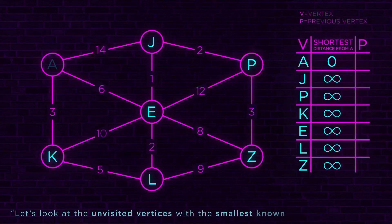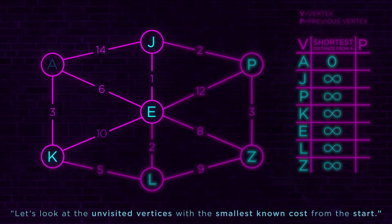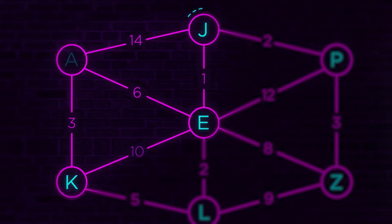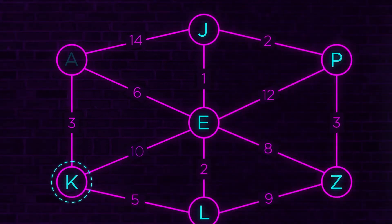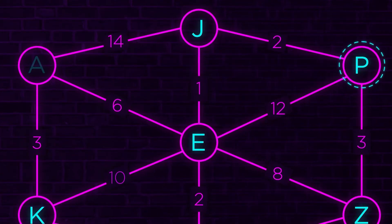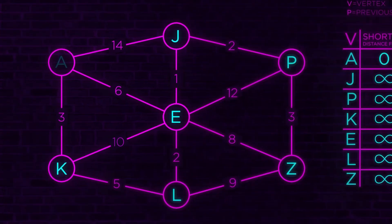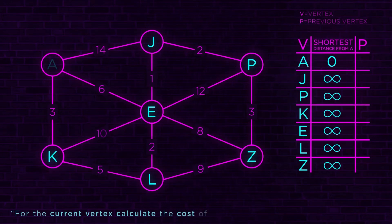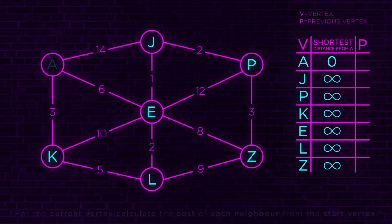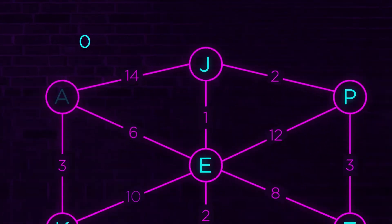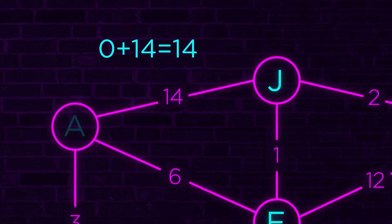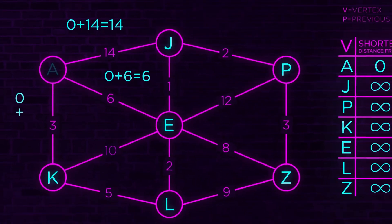Look at the unvisited vertices connected to A: they are J, E, and K. P has no direct connection to A — it goes through J. Now, for the current vertex, calculate the cost of each neighbor from the start vertex. A has a cost of zero, so: J is zero plus 14, which equals 14. E is zero plus 6, which equals 6. And K has a cost of three. Next, if the calculated cost is less than the known cost in the table, update it with the cheaper cost. J was infinity, so we update it to 14. E was infinity, now it's 6. K was infinity, now it's 3.